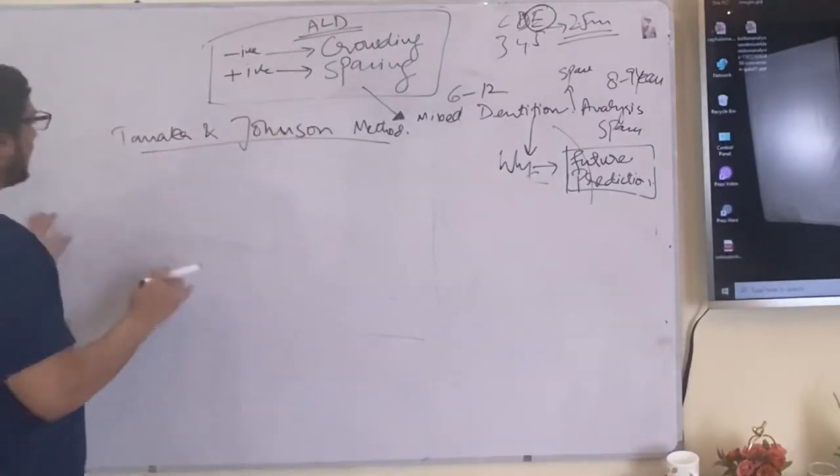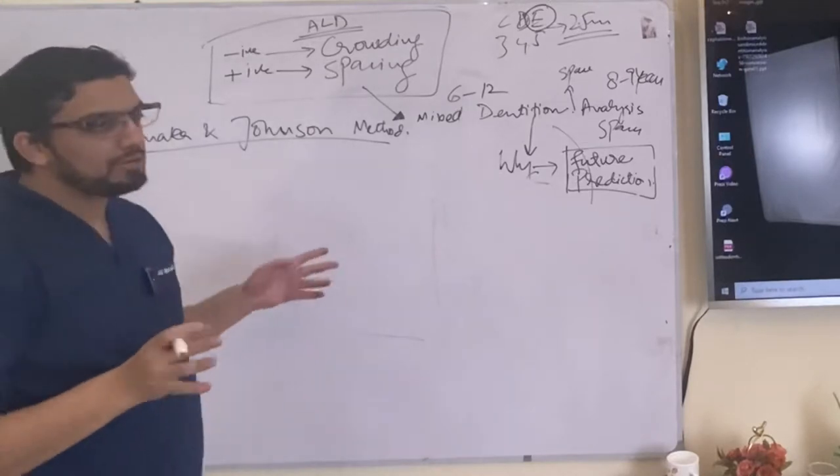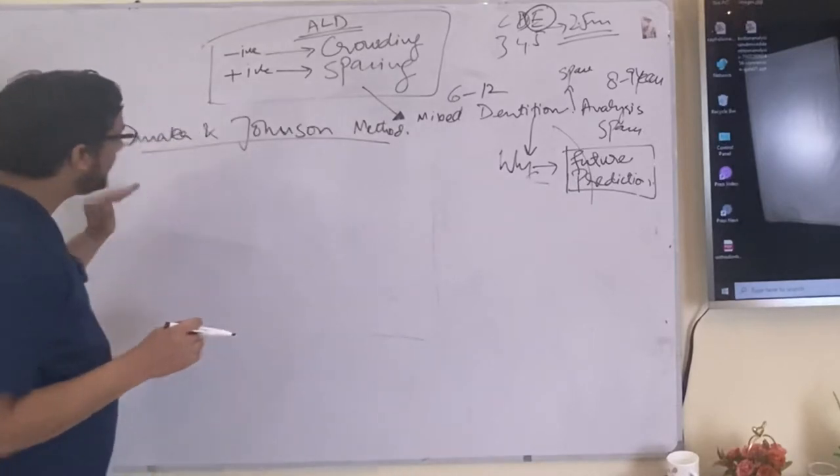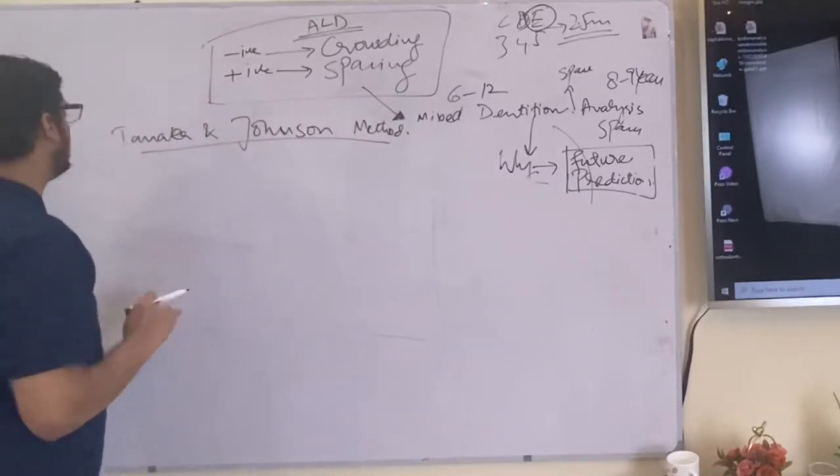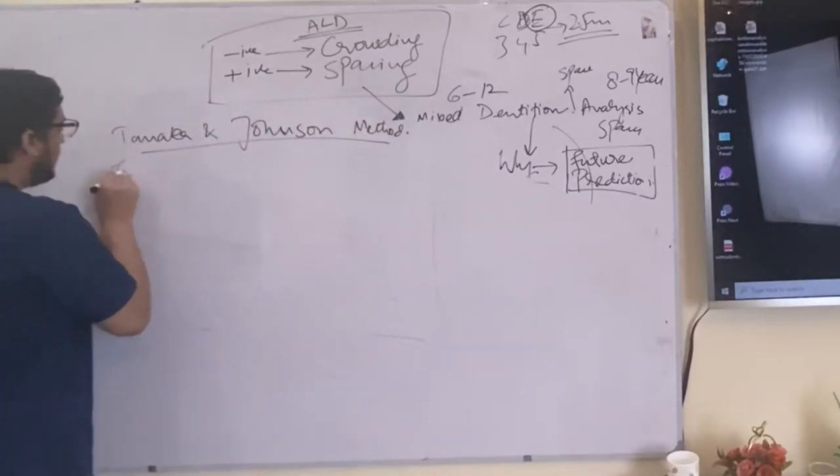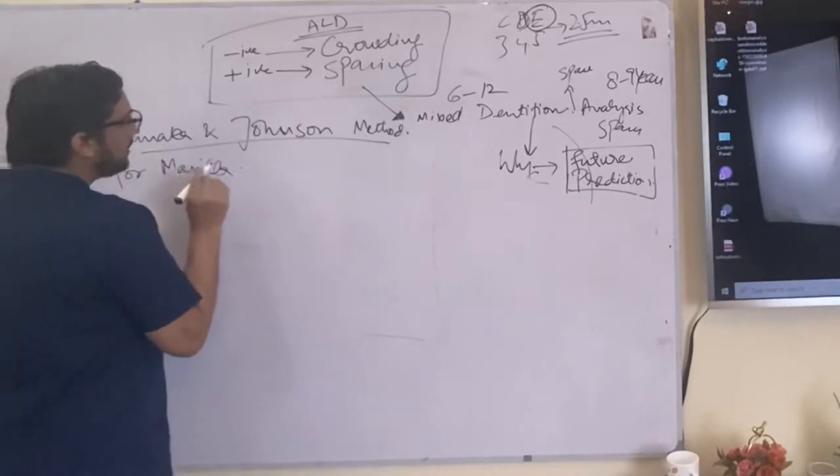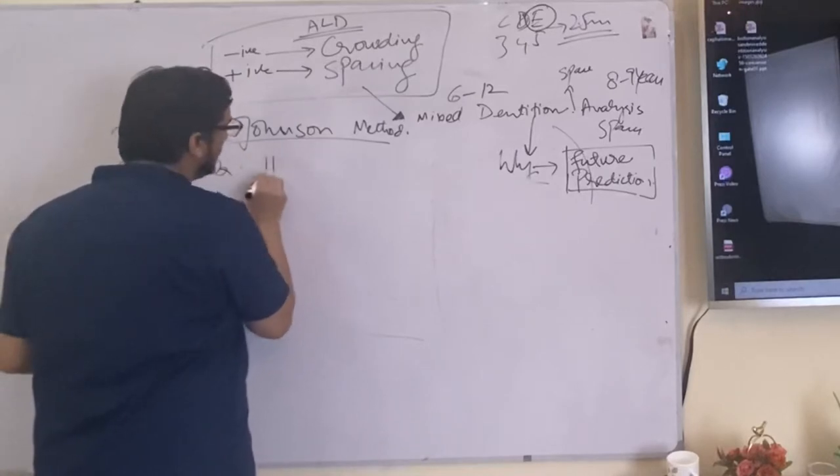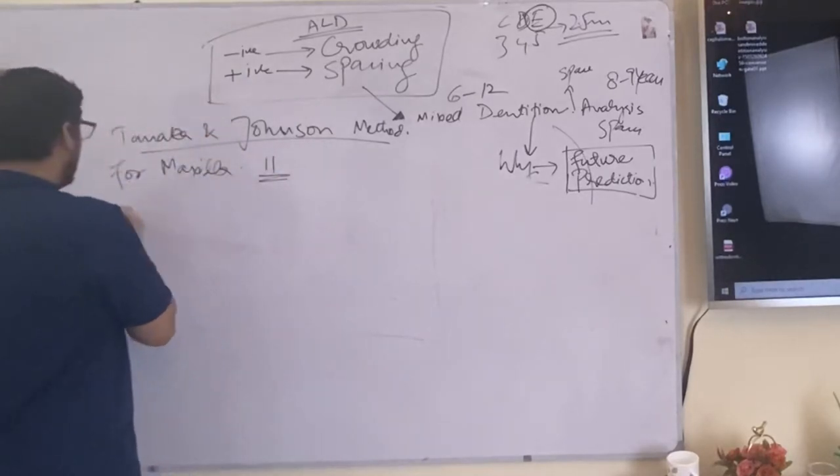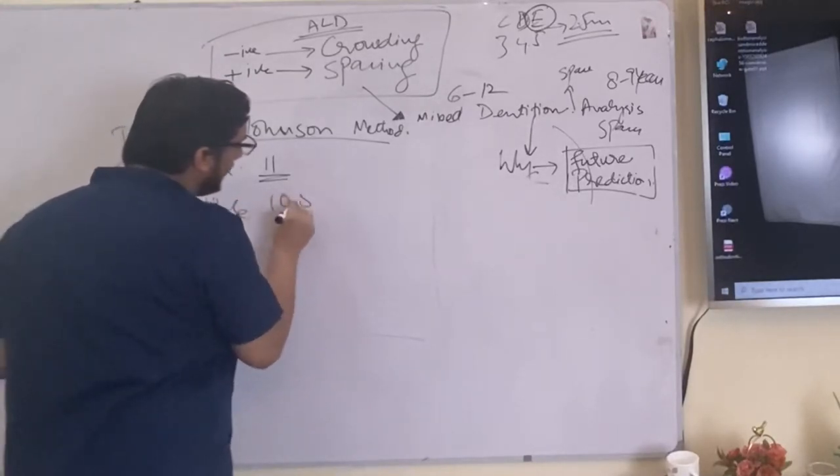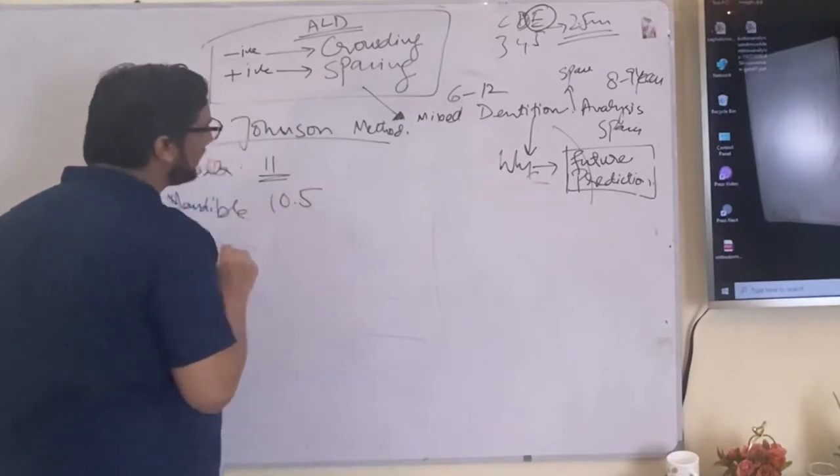In the Tanaka and Johnson they have developed a coefficient. I am not going into detail how they have concluded these coefficient but how you will use this method we are just going to discuss it. For maxilla the coefficient is 11, for mandible the coefficient is 10.5.